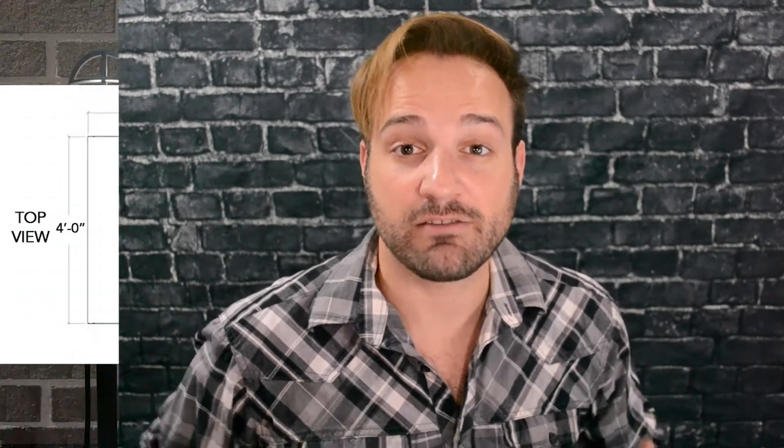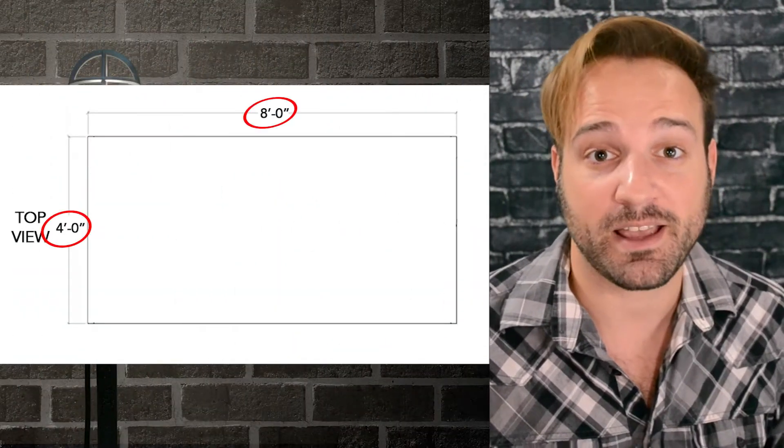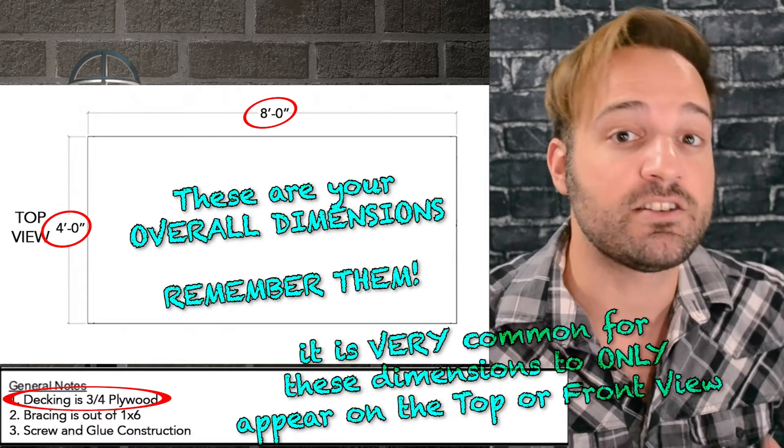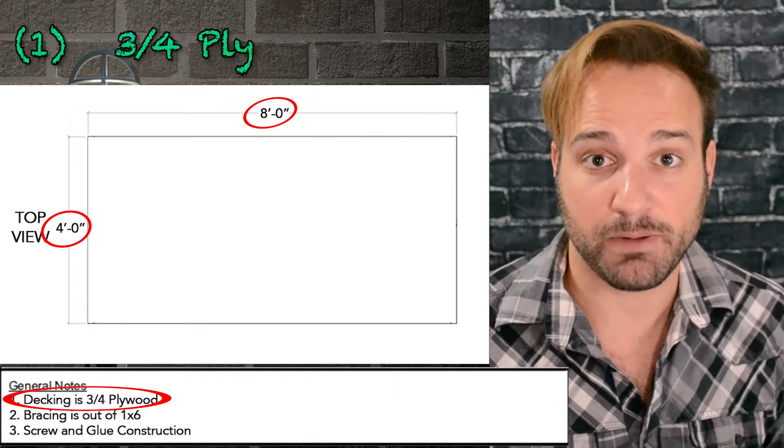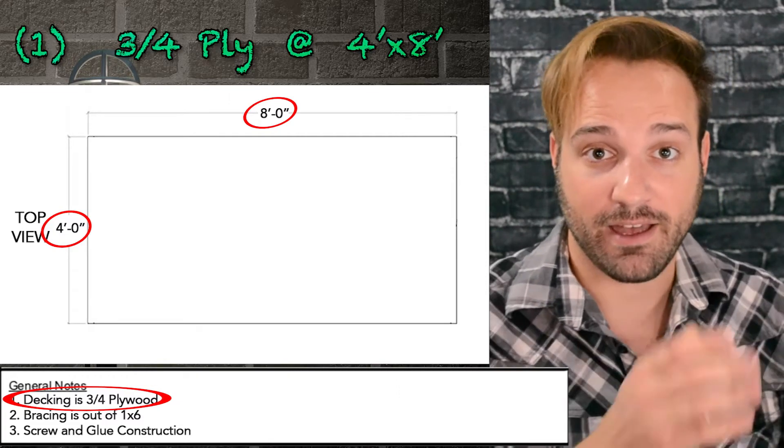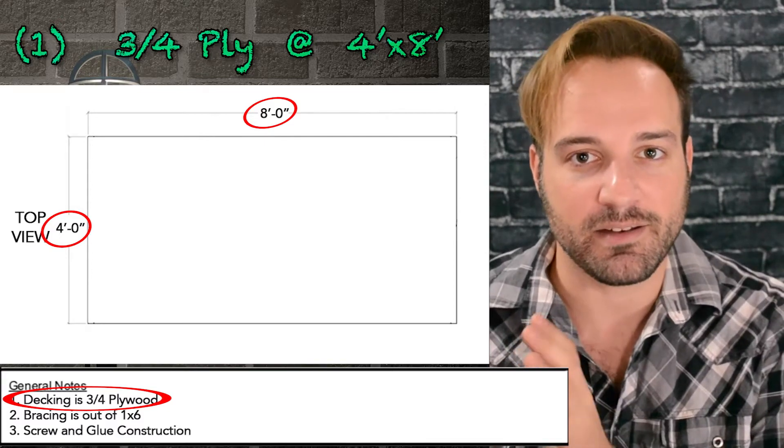I like to start generally with the top view or the front view if it's a flat. So, I'm going to need a four foot by eight foot piece of plywood, which is just a standard piece of plywood. I'm still going to put it on my sheet. So, I'm going to put one because I only need one, three-quarter ply at four feet by eight feet. I have the number that I need, I have the material that it is, and I have the measurement I'm cutting it to.